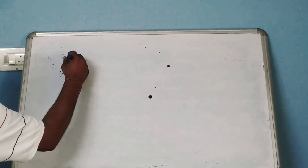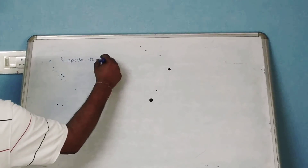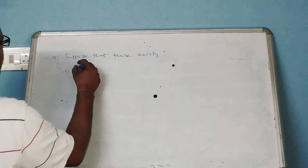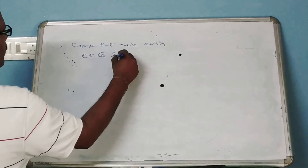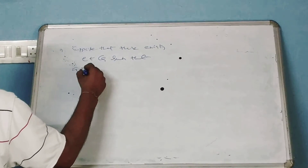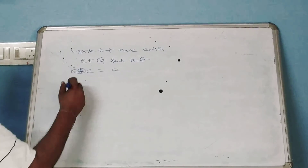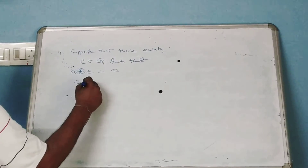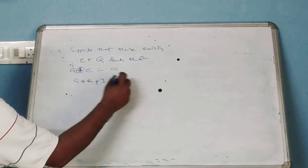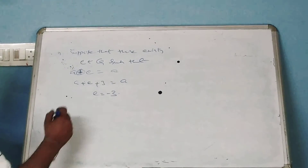Suppose that E belongs to Z such that A circular-plus E is equal to A. That means A plus E plus 3 is equal to A. Cancelling A from both sides, E is equal to minus 3.